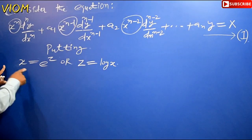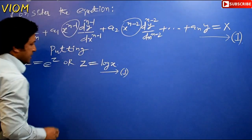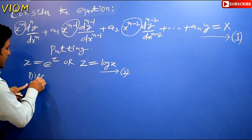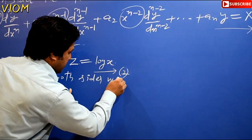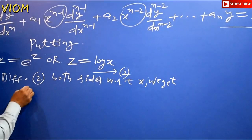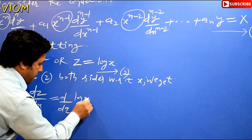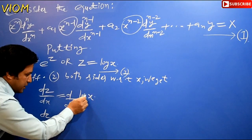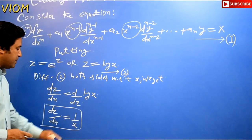Now differentiating both sides of z equals log x with respect to x, we get dz by dx equals 1 by x. So one thing is clear: dz divided by dx is equal to 1 over x.